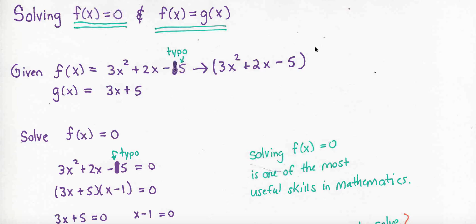And so we want to investigate how do we do this if we're given a function? Well, I've got a little typo here, but the function is 3x squared plus 2x minus 5. That's f. And g of x is 3x plus 5.